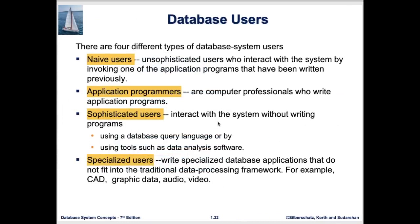There are four different types of database system users. Naive users are unsophisticated users who interact with the system by invoking application programs that have already been written — they are the users of web applications that access data through existing applications. Application programmers are computer professionals who write application programs; they need to know the logical schema or at least the subschema to know what information is available for the data application.